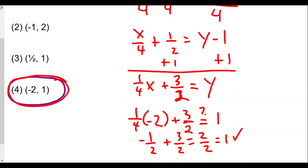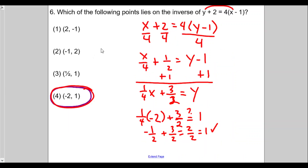We solved this two ways: first by finding the coordinate from the point-slope form and flipping x and y, and second by finding the inverse function and verifying the coordinate. Thanks so much for watching — hope you found this video helpful. Please give it a like, subscribe, and turn on notifications for new videos. Leave any comments or questions below. Take care and be safe.